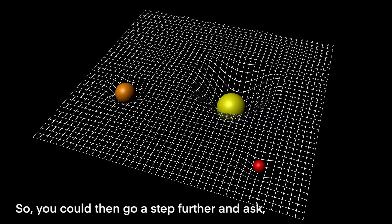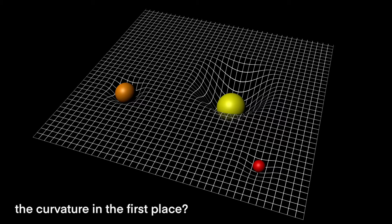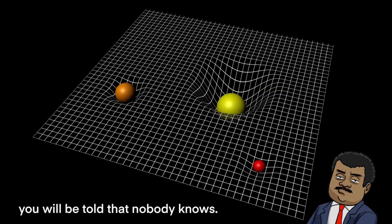So you could go a step further and ask: if gravity is the effect of curved space-time and not the cause, why does matter create the curvature in the first place? If you ask the astrophysicist that question, you'll be told that nobody knows. Why does matter and energy curve space and time? That's a frontier we're still working on.